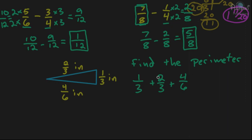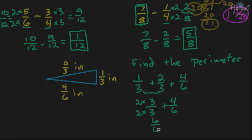We notice the first two numbers have like denominators, so we can go ahead and add those: 1 third plus 2 thirds is 3 thirds, and then plus 4 sixths. In order to add 3 thirds and 4 sixths, we need to change the denominator. The least common multiple of 3 and 6 is just 6, so we change 3 thirds by multiplying the top and bottom by 2, getting 6 over 6. So we have 6 over 6 plus 4 over 6, which equals 10 sixths.